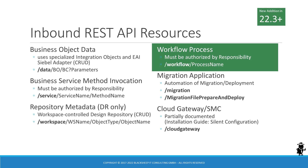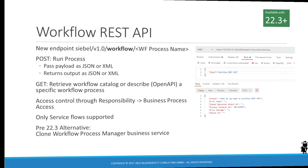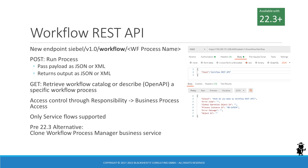The new addition is of course the Workflow API, which allows external systems to directly invoke Siebel workflow processes. The Siebel workflow REST API uses the new workflow endpoint. To invoke a workflow process, we must provide the process name and the required input arguments in a POST request. The response will contain the output arguments of the workflow process.